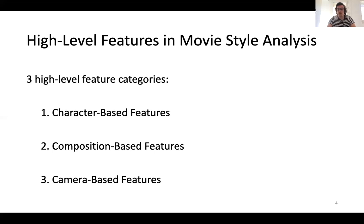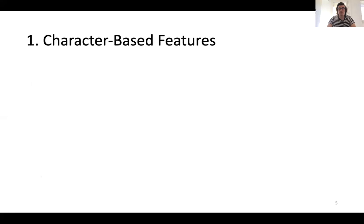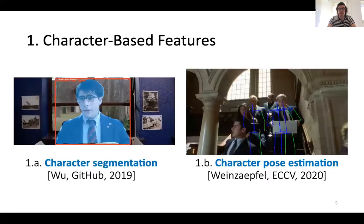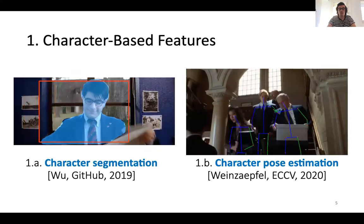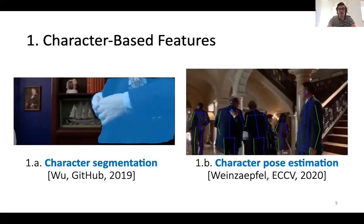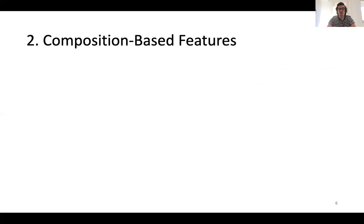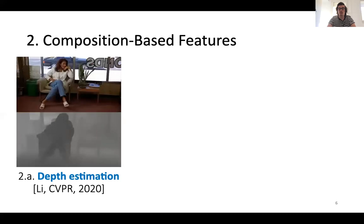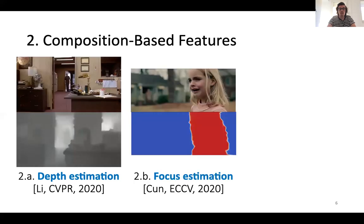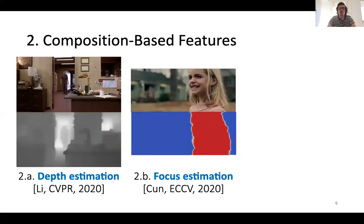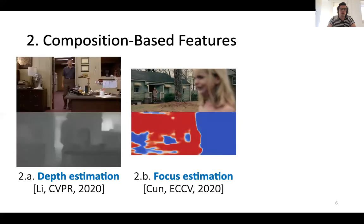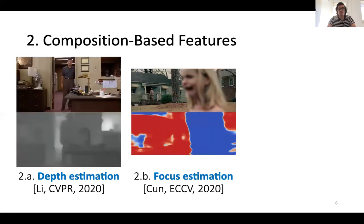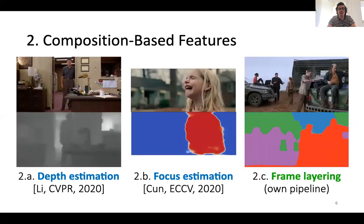We have two character-based features: character segmentation and character pose estimation. For both, we track them within space and time. Then, we have three composition-based features — two that already exist and one that we propose. The first is depth estimation, with an example of a character coming from the back of the scene. Then, focus estimation, with a great example of a change of focus between foreground and background. Finally, we have frame layering — a feature we designed that aims to retrieve the structure of the mise-en-scène with its different layers.